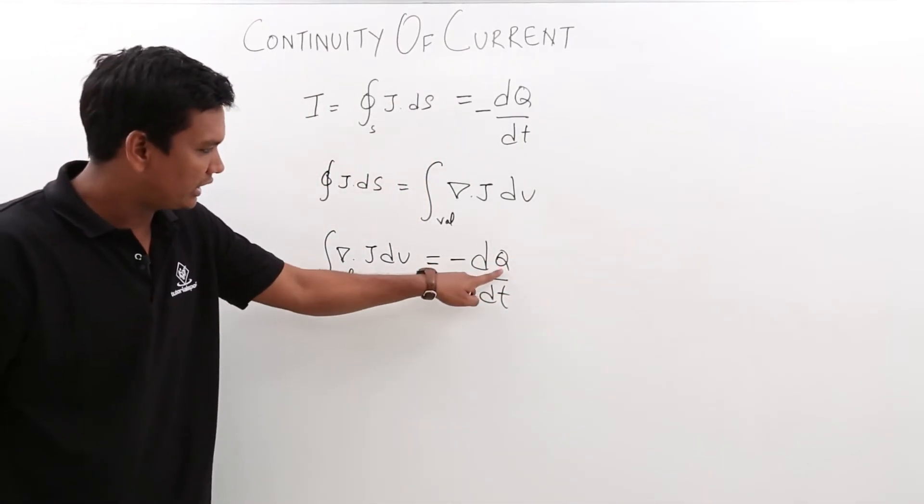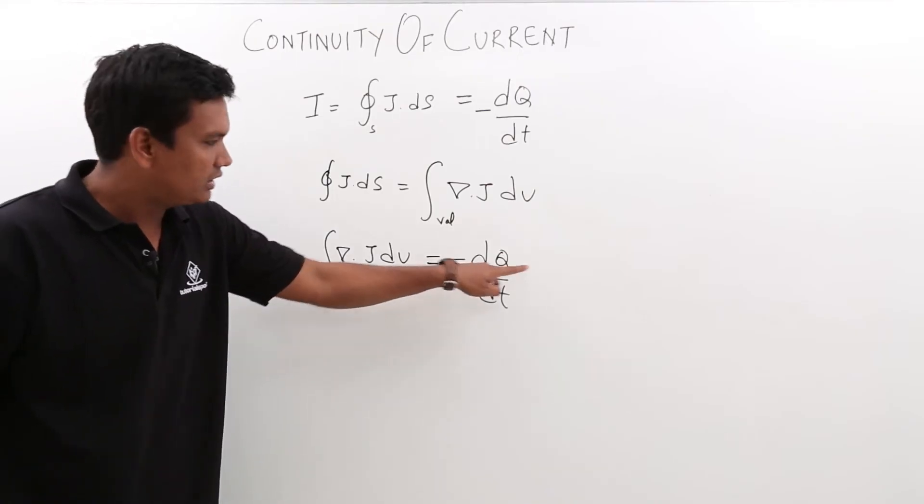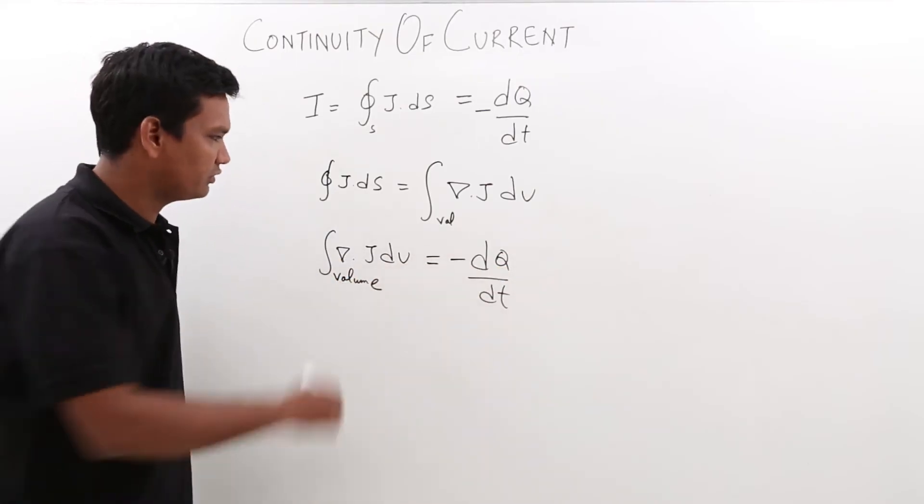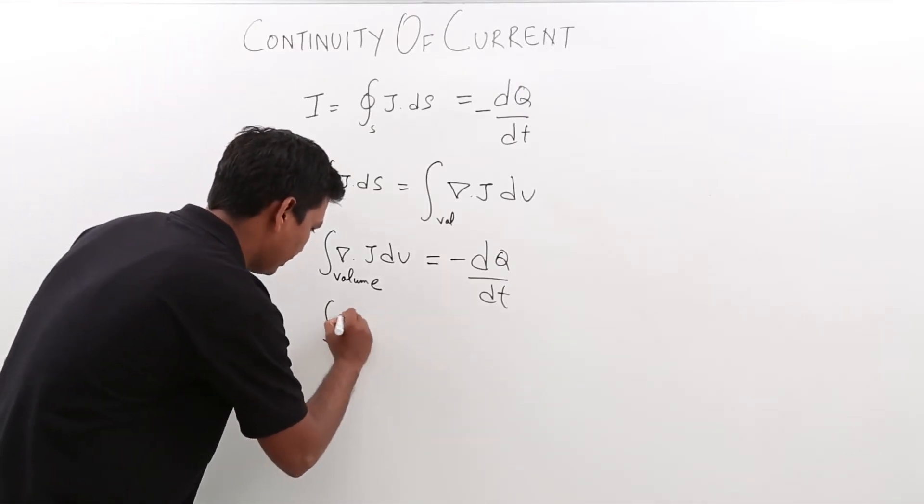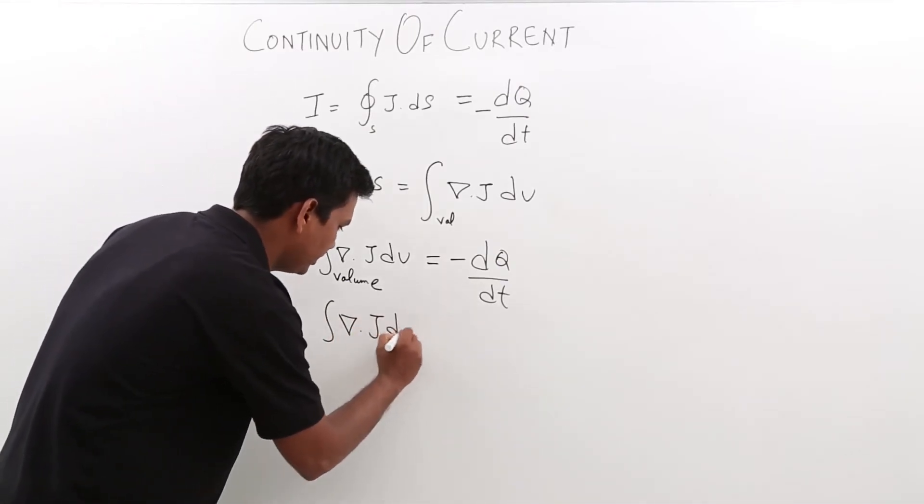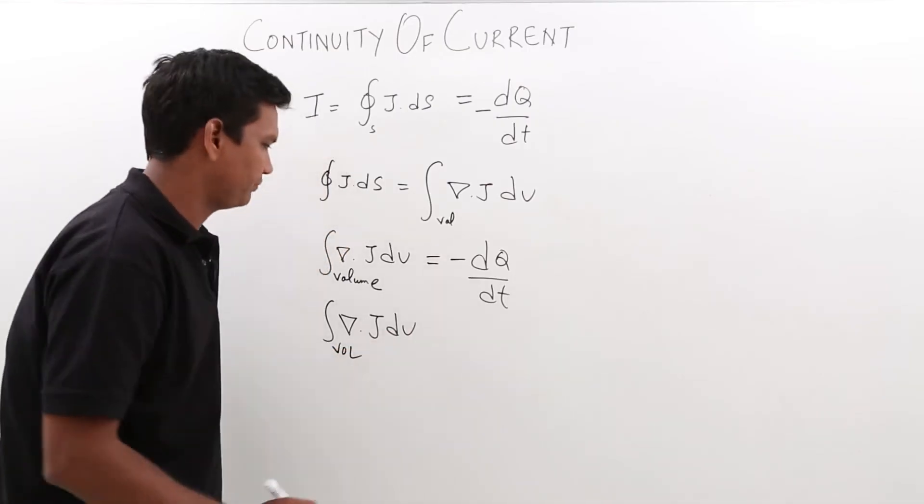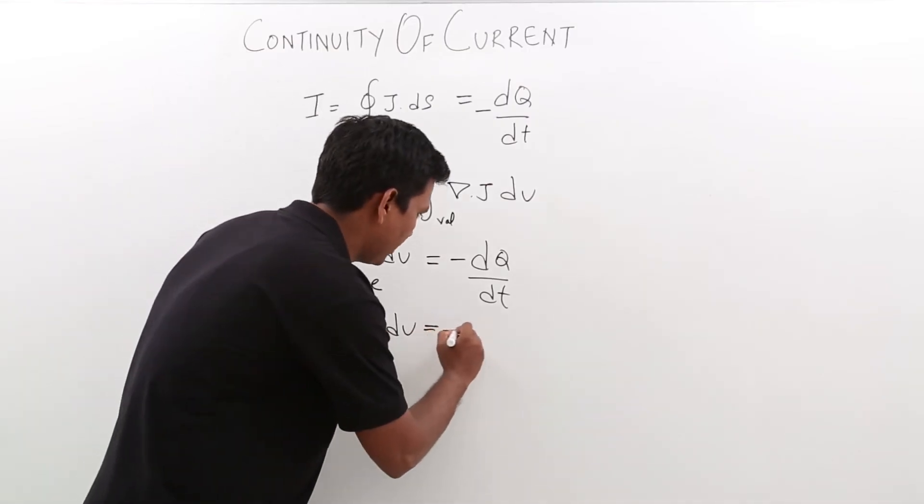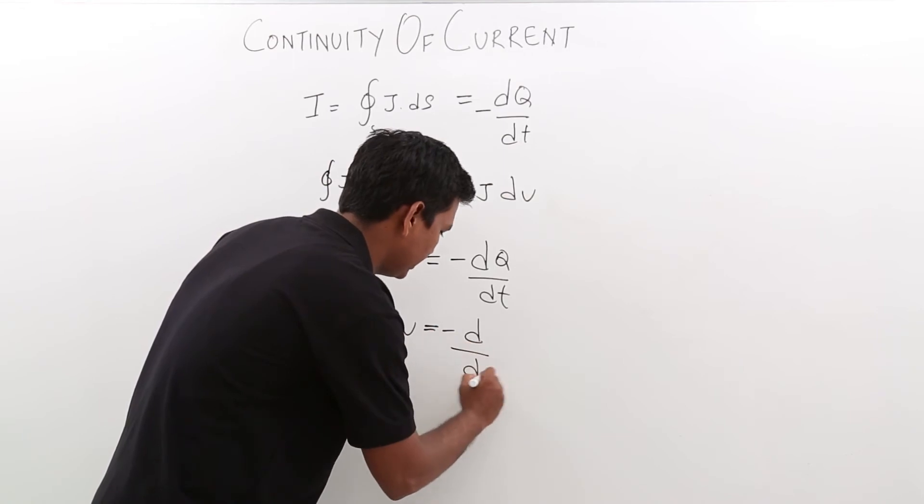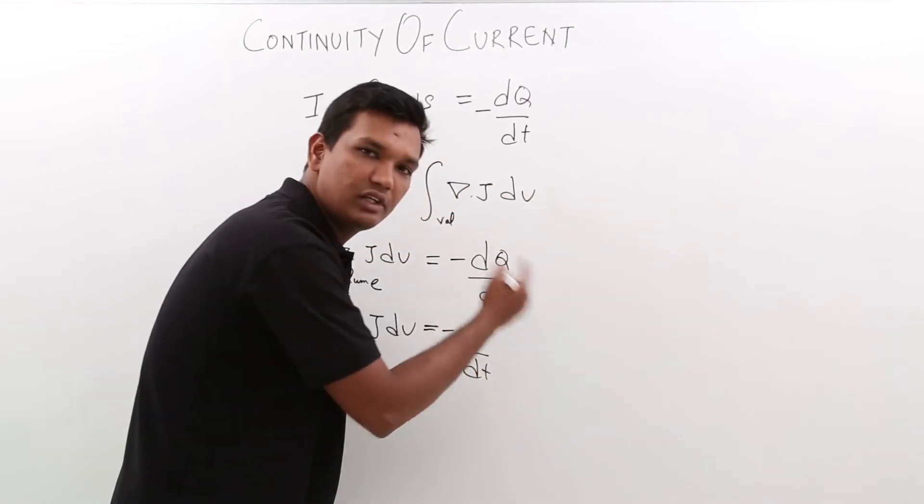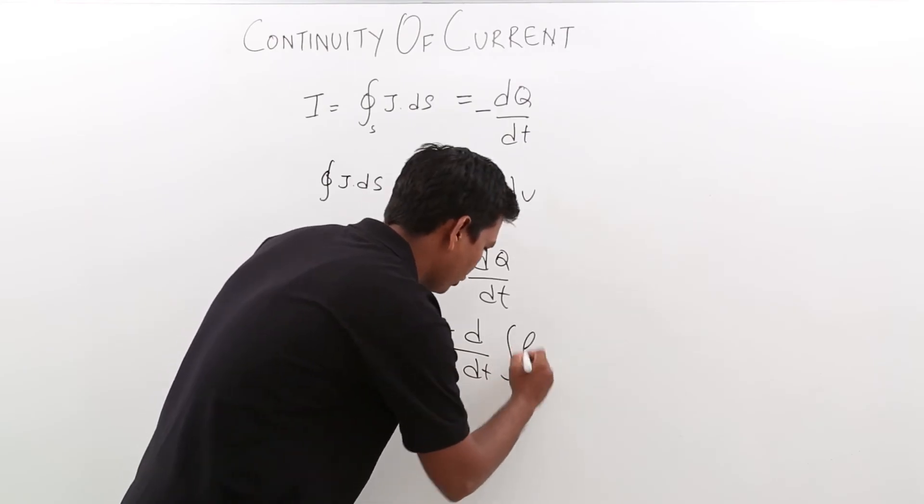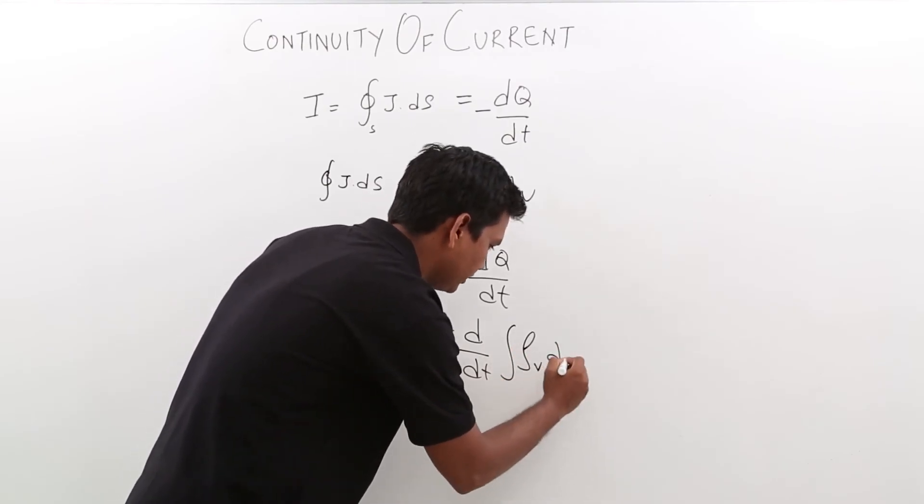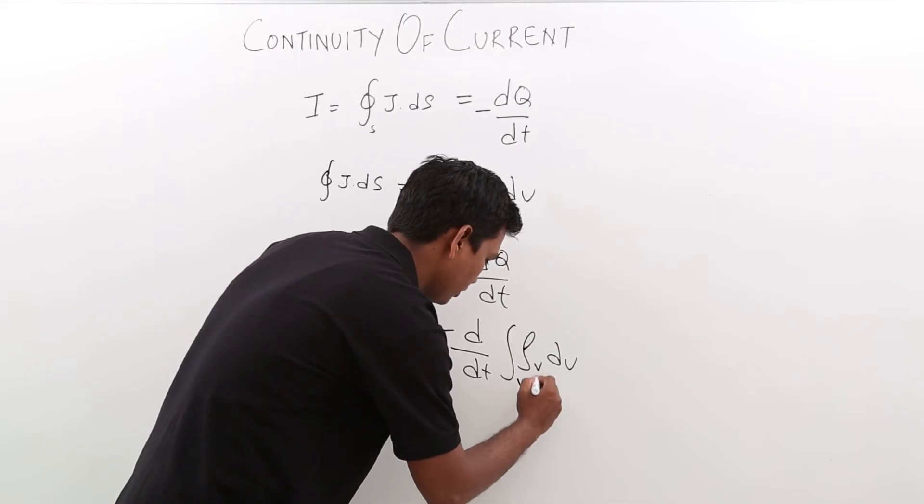We also know that Q is nothing but the volume charge density, so we can compare that with volume charge density. The volume integral of del dot j dv is equal to minus d by dt of the charge, which we will replace with volume charge density. So it would be rho v dv over the volume.